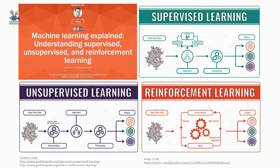Moving on to unsupervised learning — unsupervised learning is the training of a machine using information that is neither classified nor labeled, allowing the algorithm to act on that information without guidance. The task of the machine is to group unsorted information according to similarities, patterns, and differences without any prior training of data. Unlike supervised learning, no teacher is provided, so the machine must find hidden structure in unlabeled data by itself.